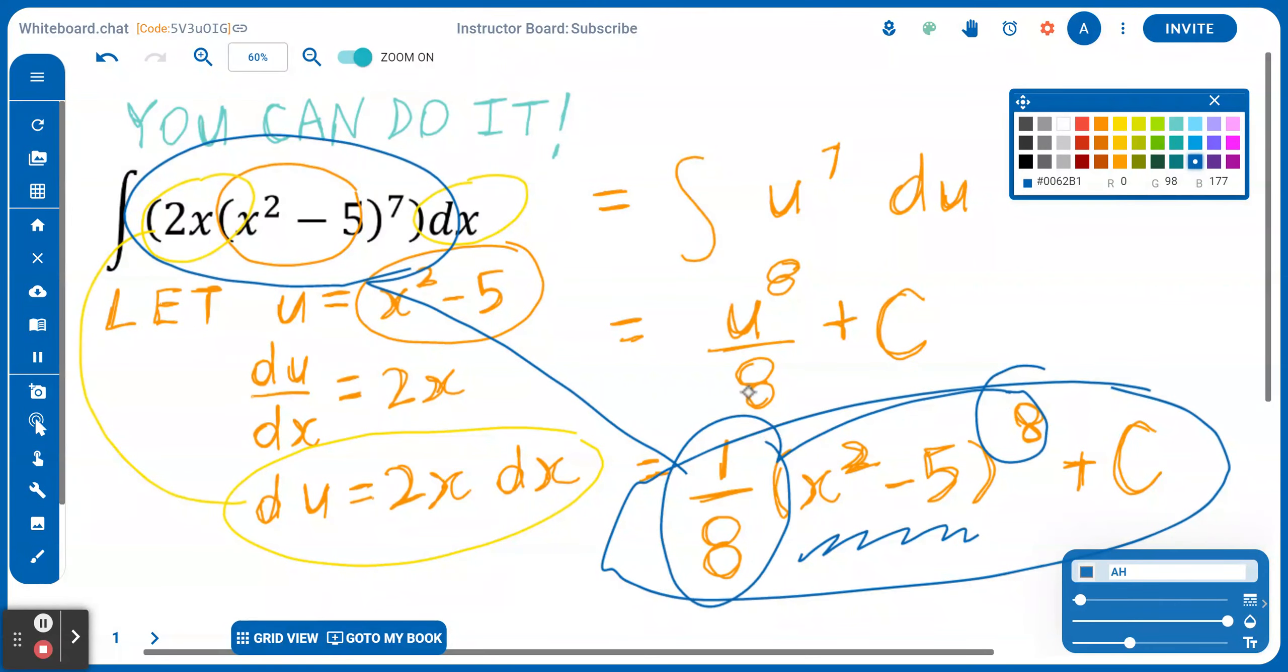8 times 1 over 8 is going to be 1. Then you copy x squared minus 5 to the power of 7 times the internal derivative, which is 2x. And of course, when you differentiate a constant, that's going to be 0. It will give you exactly 2x times, in brackets, x squared minus 5 to the power of 7 back.